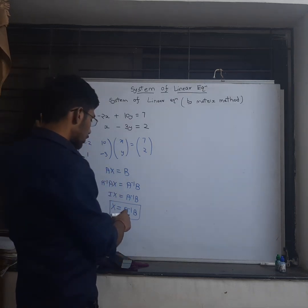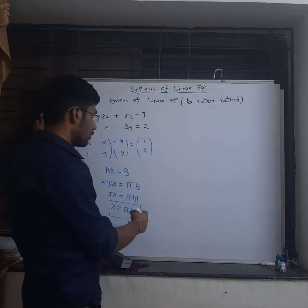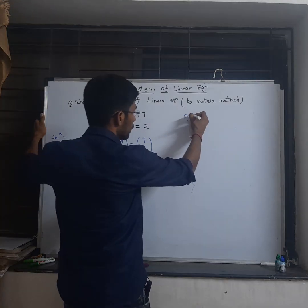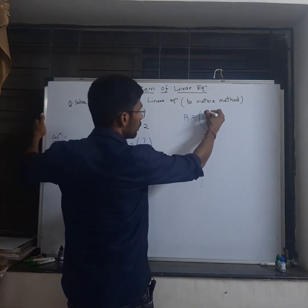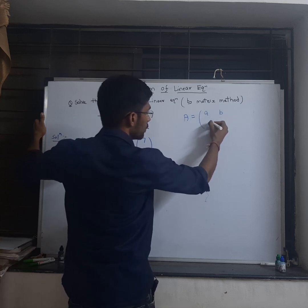So now next is to find the A inverse. For a given matrix A equals to a, b, c, d, A inverse is given by...